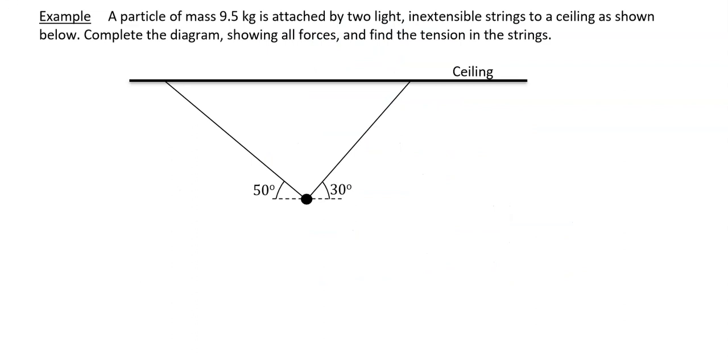Our last example says, a particle of mass 9.5 kilograms is attached by two light and extensible strings to a ceiling as shown. Complete the diagram showing all forces and find the tension in the strings. This thing here, this is our 9.5 kilogram mass. So it's going to have a weight going vertically down. So its weight is going to be 9.5g newtons. It is held up by the tension in these strings. So I'm going to call one of them t1, and I'm going to call the other one t2. I'm going to use my preferred method.